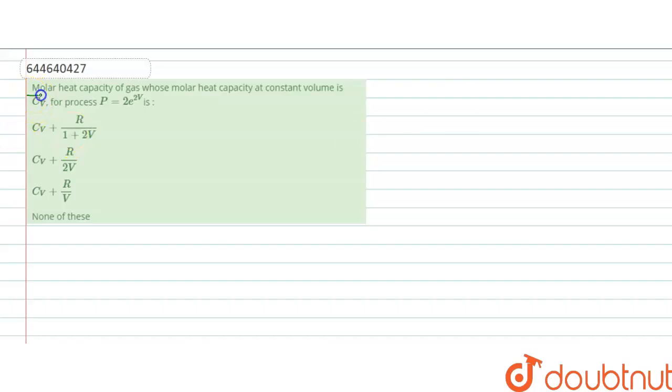The question is: what is the molar heat capacity of a gas whose molar heat capacity at constant volume is Cv, for the process P equals 2e to the power 2V? We have options 1, 2, 3, and statement 4 is none of these.